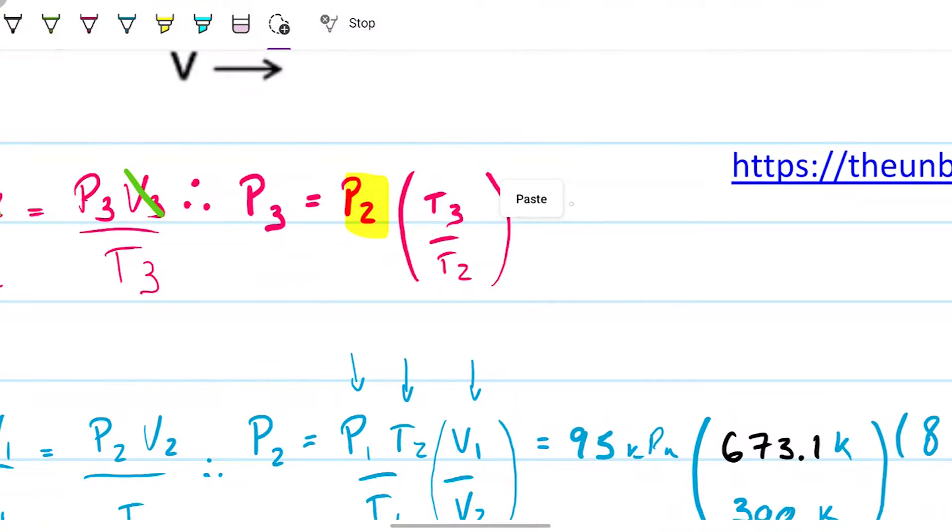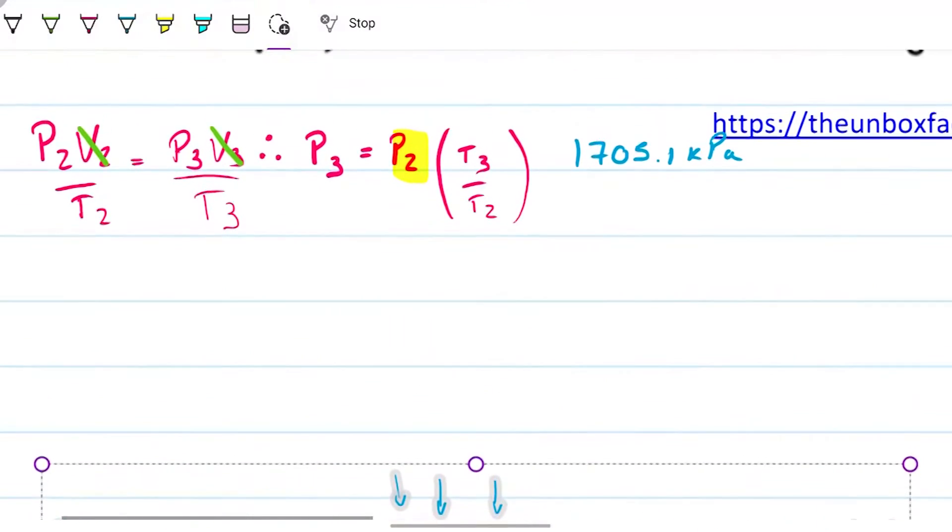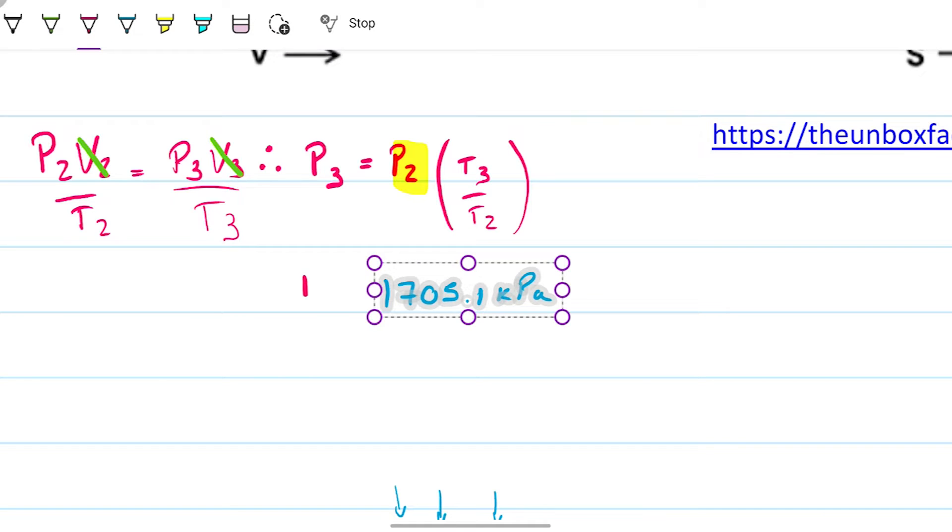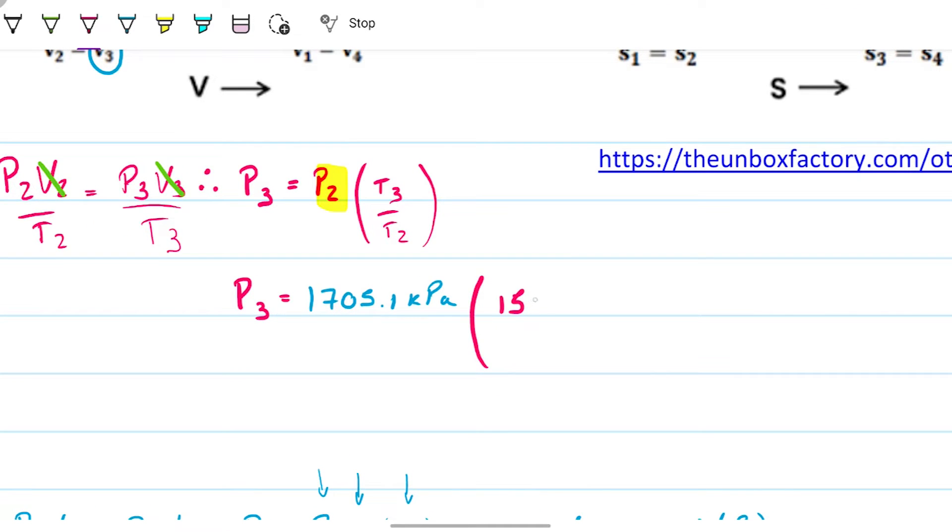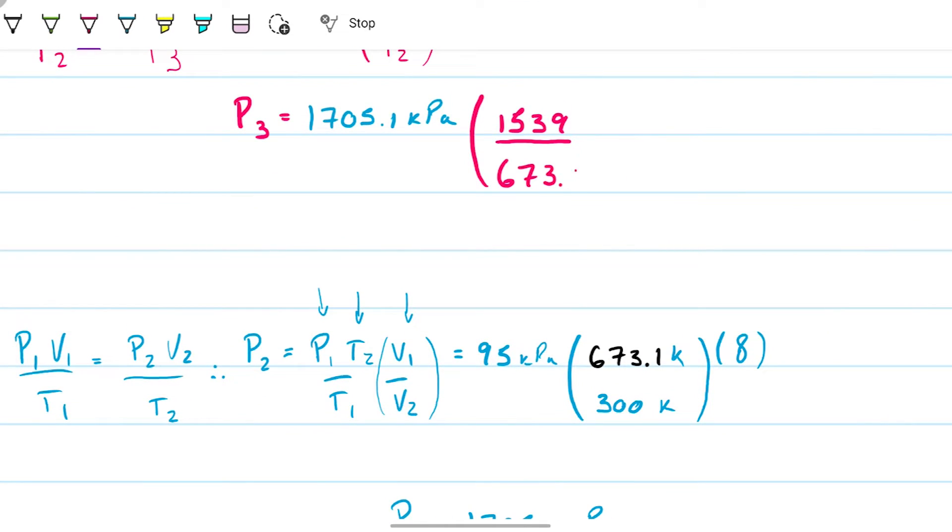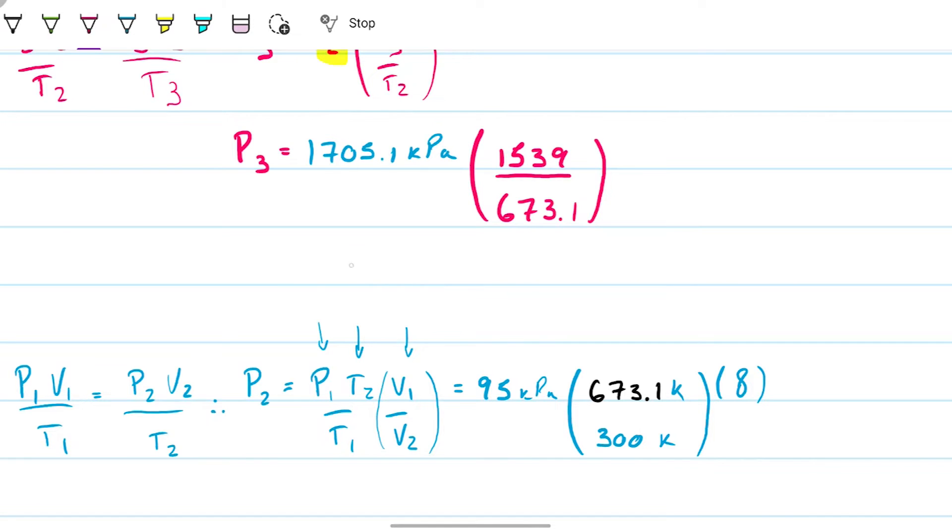So now I have P₂. This becomes P₃ equals P₂ that we just found, T₃ that we know, 1539, divided by T₂ that we also know, which is 673.1. So P₃, according to all this, is 3899 kilopascals. That was a lot of work to find pressure 3, but that's part A. Part A is what is the temperature 3 and what is pressure 3.